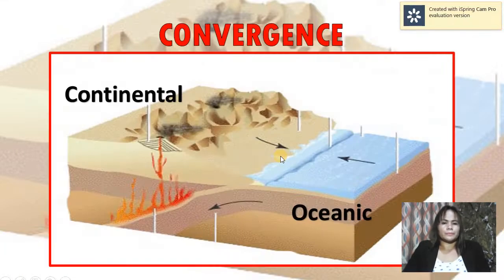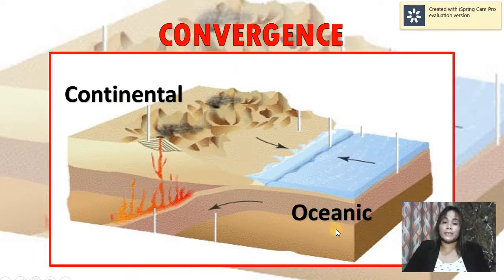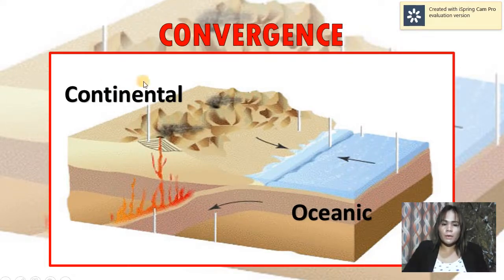Moving on to the different types of convergence. There are actually three different types: it can be a continental-oceanic convergence, a continental-continental convergence, or an oceanic-oceanic convergence.